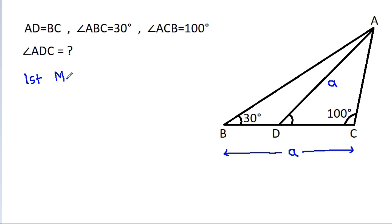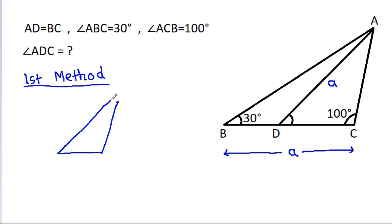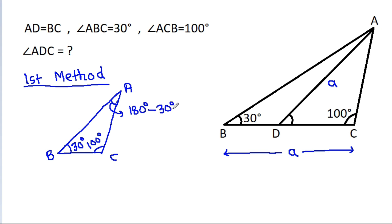The first method: in triangle ABC, angle ABC is 30 degrees and angle ACB is 100 degrees. So the remaining angle will be 180 degrees minus 30 degrees minus 100 degrees, that will be 50 degrees.